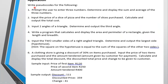As your application, you should write pseudocode for the following: number one — prompt the user to enter three numbers, then determine and display the sum and average of the three numbers. Number two — input the price of a slice of pizza and the number of slices purchased, then calculate and output the total cost. You will try both examples and send a picture so I can mark it. I will present one more video where I complete one with you so you can see how it works. Thank you.